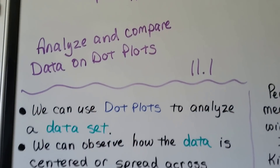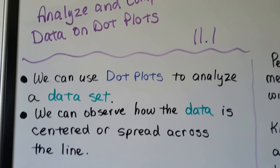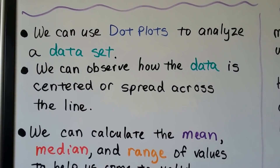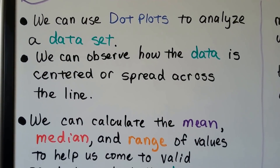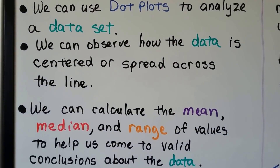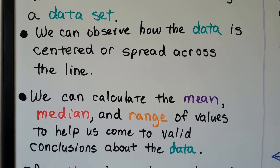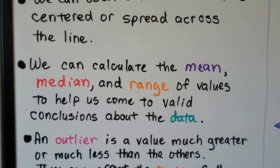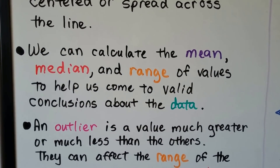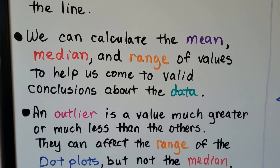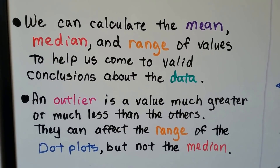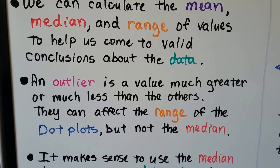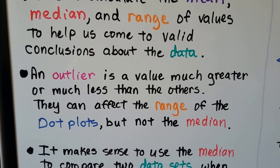We can use dot plots to analyze a data set. We can observe how the data is centered or spread across the line. We can calculate the mean, median, and range of values to help us come to valid conclusions about the data.